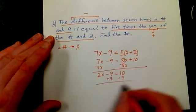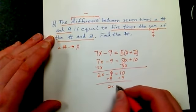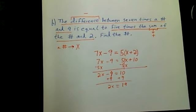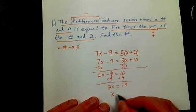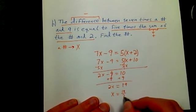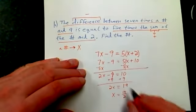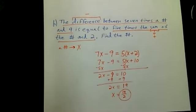2X is going to be equal to 19. And then I have to divide both sides by 2, and X is going to be 19 over 2. So there's our number. Find the number: the number is 19/2.